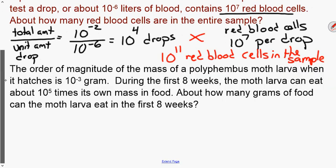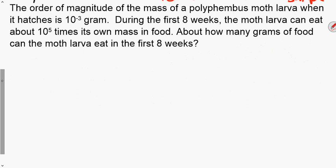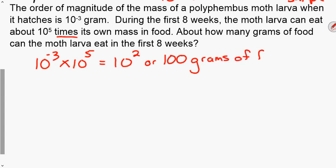One last one talking about order of magnitude again. So everything becomes power of 10. It says the order of magnitude of the mass of a polyphimus moth larva when it hatches is 10 to the negative 3rd gram. During the first 8 weeks, the moth can eat about 10 to the 5th times its own mass in food. About how many grams of food can the moth larva eat in the first 8 weeks? So when we're talking times, we're going to multiply. So we're going to take 10 to the negative 3 and multiply by 10 to the 5th. So we get 10, and please don't multiply the exponents. That is not how it works. You add the exponents. So you get 10 to the 2nd or 100. We're talking about grams of food. So 100 grams of food.